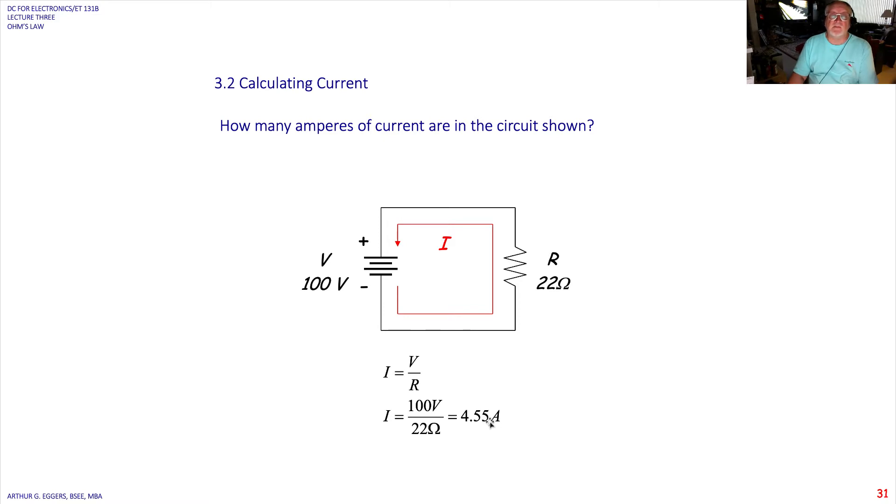If we wanted to make this milliamps, we'd have to move this decimal place one, two, three spaces. And we would end up with the amount of milliamp current.